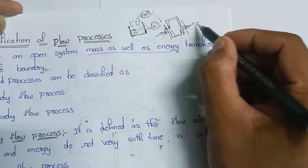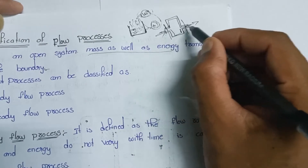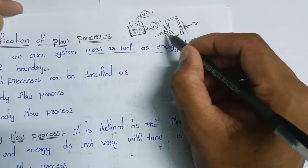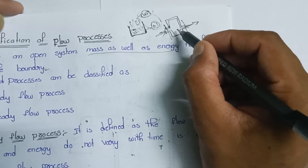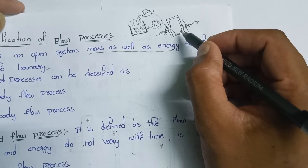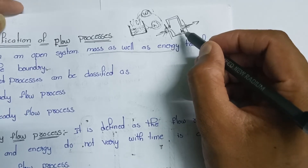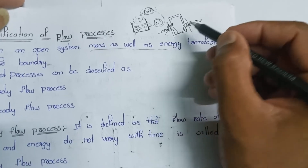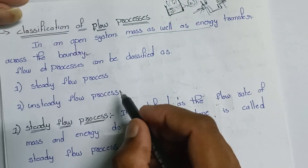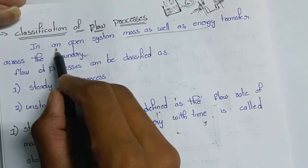The temperature will decrease. If we pump the water, the vapors will decrease the temperature. Open system: mass as well as energy transfer across the boundary. The boundary is where the mass will transfer the energy.